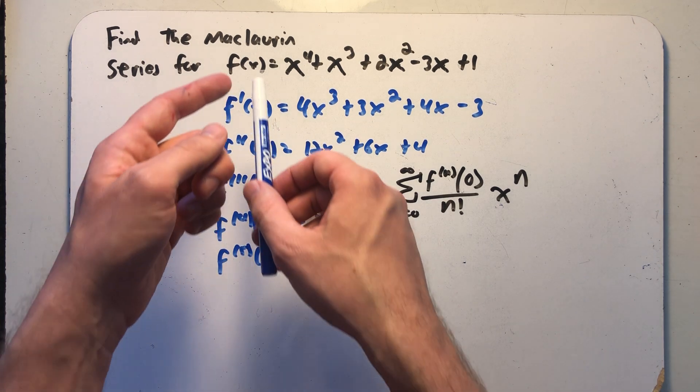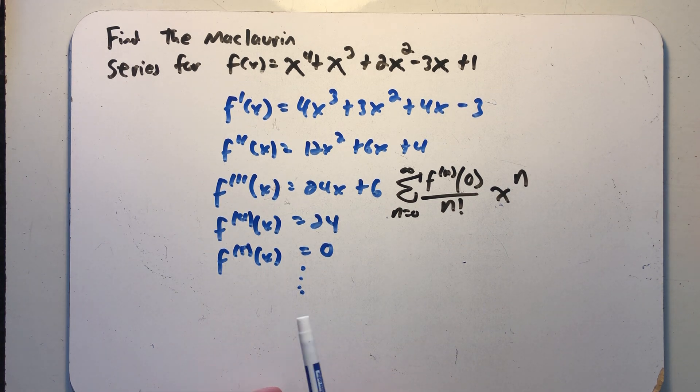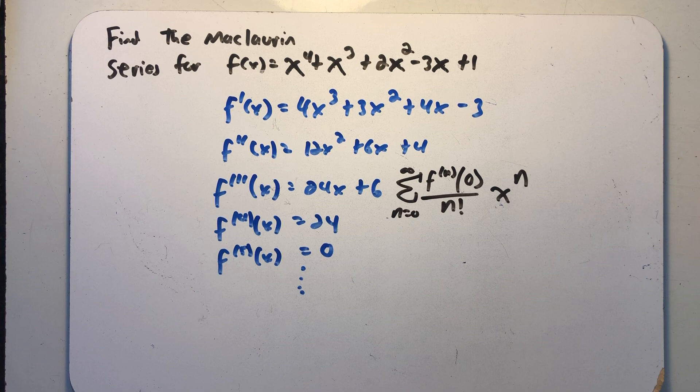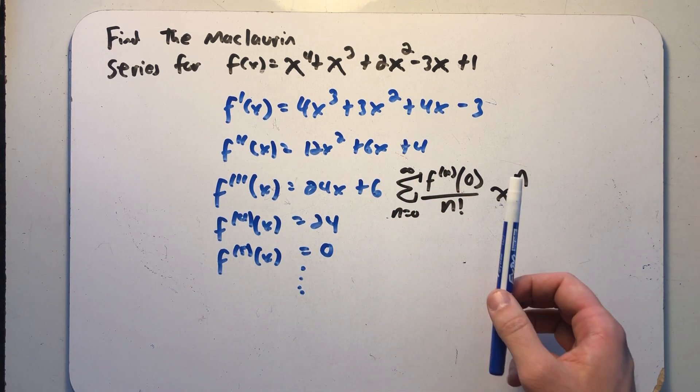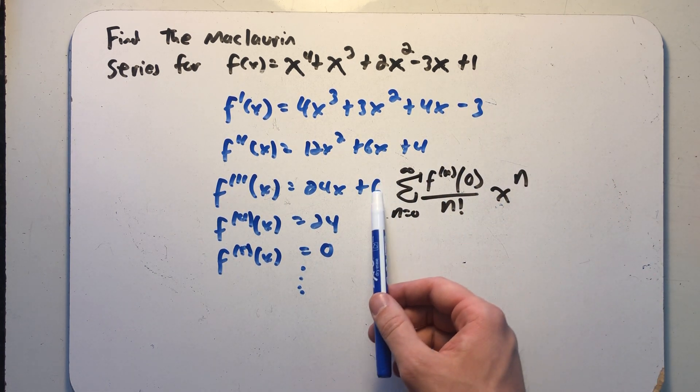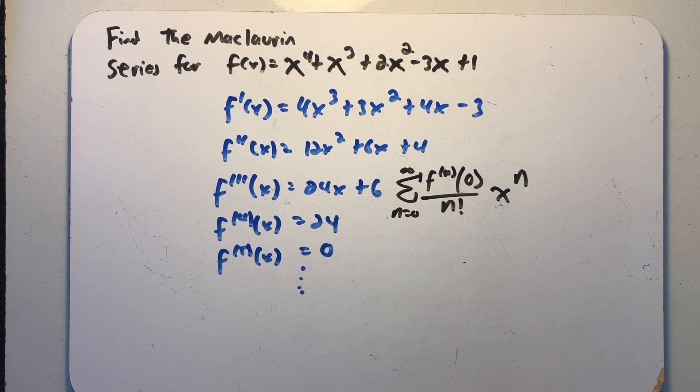Well, I need to plug zero into all of them, right, divide by the appropriate factorial, and then x to the order of the derivative I'm on. Well, they're polynomials. If I plug in zero, I just get out the constant term, so that's not going to be too hard.